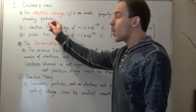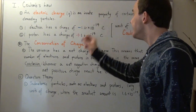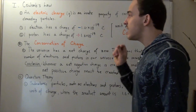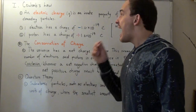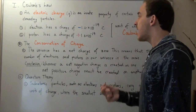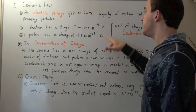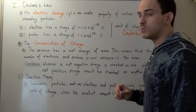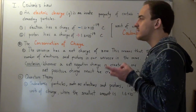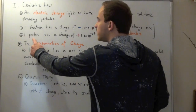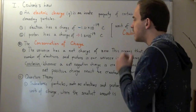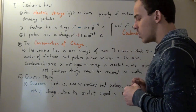An electric charge, Q, is an innate property of certain subatomic particles. One electron has a charge of negative 1.6 times 10 to the negative 19 Coulombs, where Coulombs is our unit of charge. Likewise, one proton has a charge of positive 1.6 times 10 to the negative 19 Coulombs.